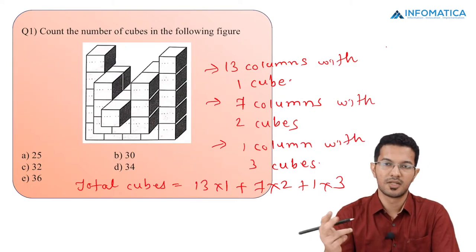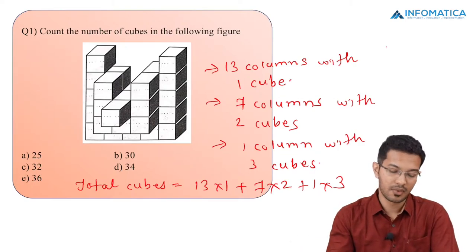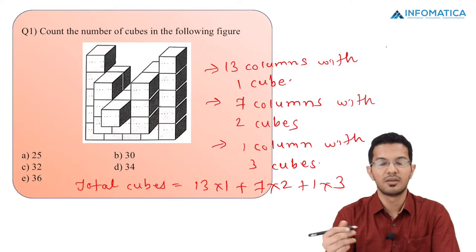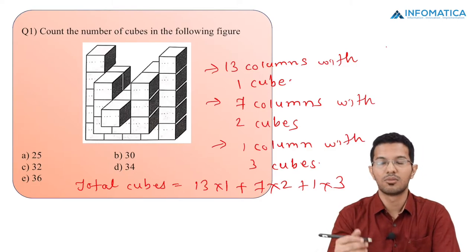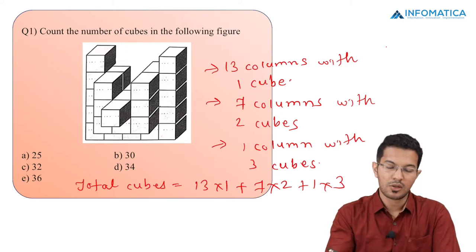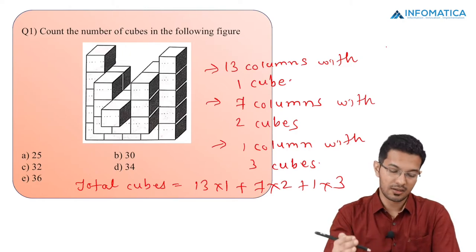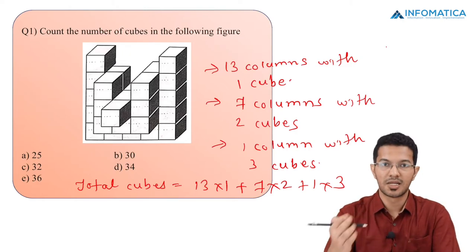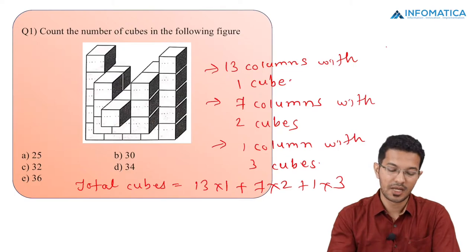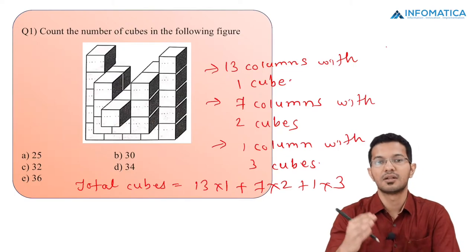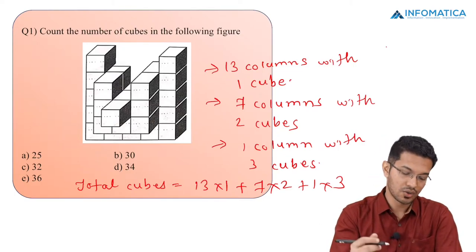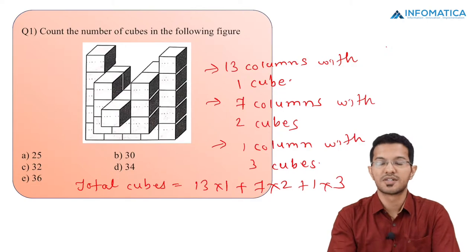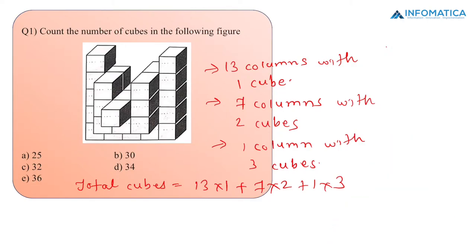13 multiplied by 1 is 13, 7 multiplied by 2 is 14, and 1 multiplied by 3 is 3. So I get 13 plus 14 which gives me 27, and 27 plus 3 gives me 30. So the answer to this question is option B, which is 30.